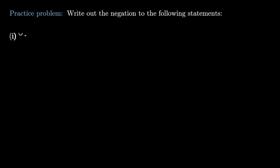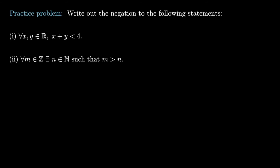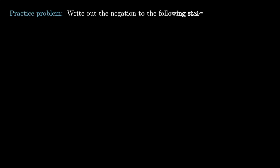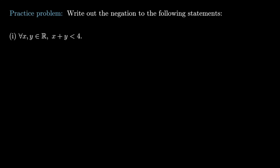Here are some practice problems. Try to write out the negation of the following statements. The first: 'for all x, y in ℝ, x + y < 4.' The second: 'for all m in ℤ, there exists n in ℕ such that m > n.' For the first statement, we need to negate a universal quantifier, which gives an existential quantifier: there exist x, y in ℝ such that x + y ≥ 4.